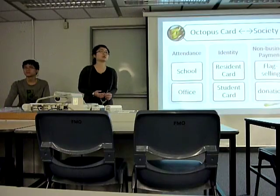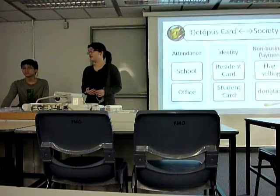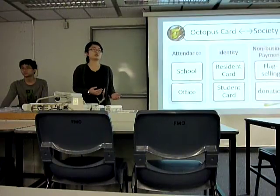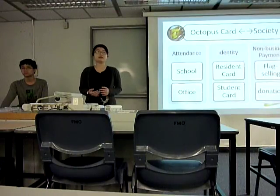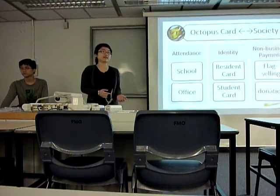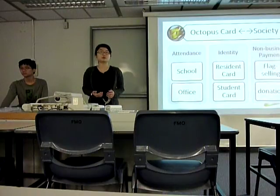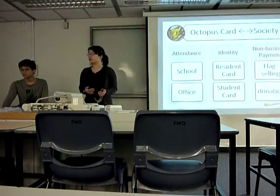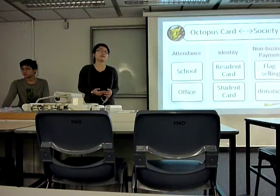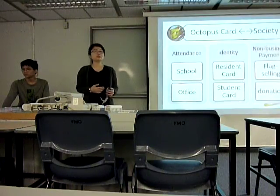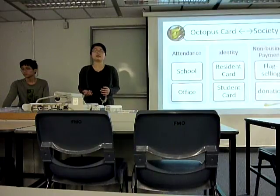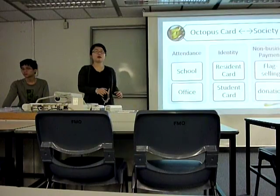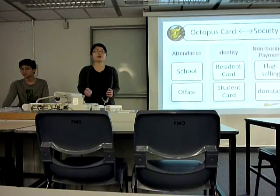The Octopus card is also related to society. First of all, it can be used for attendance records for schools or offices. It can also be used as identification for schools and buildings. Octopus cards can also be used for non-business payments. For example, if you want to donate money through flag selling, you can set the amount at the reader and transfer your money there.